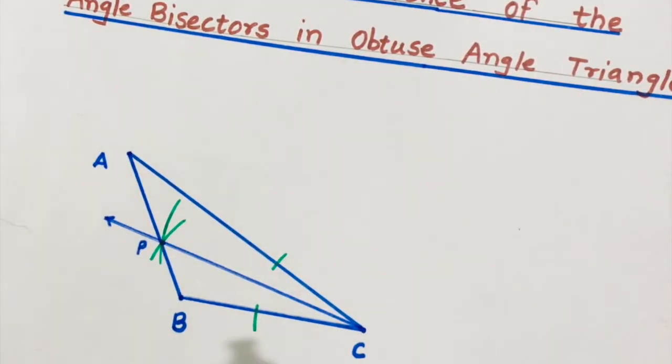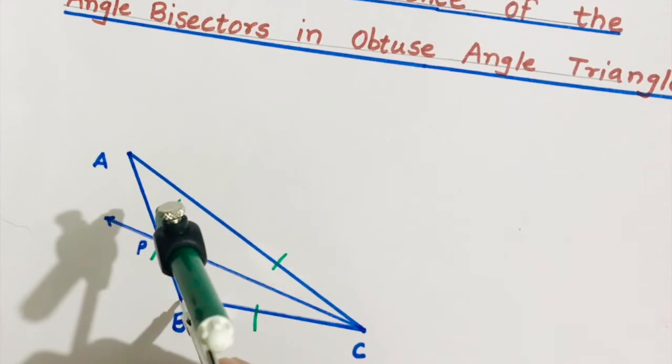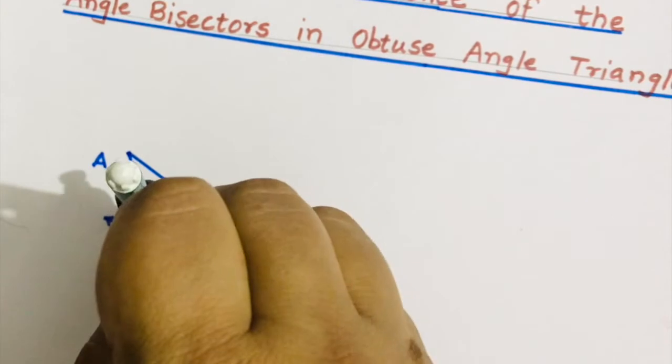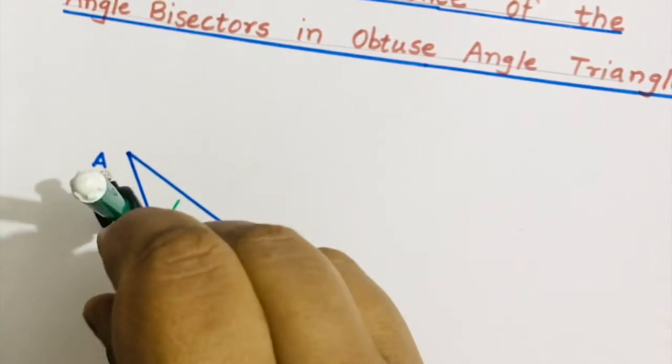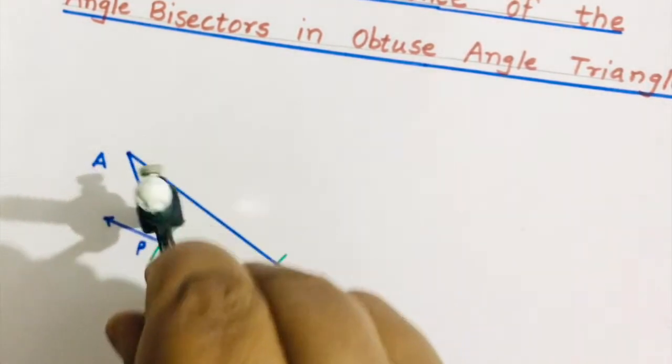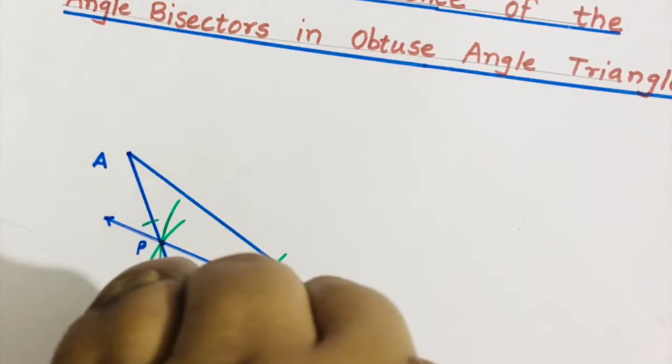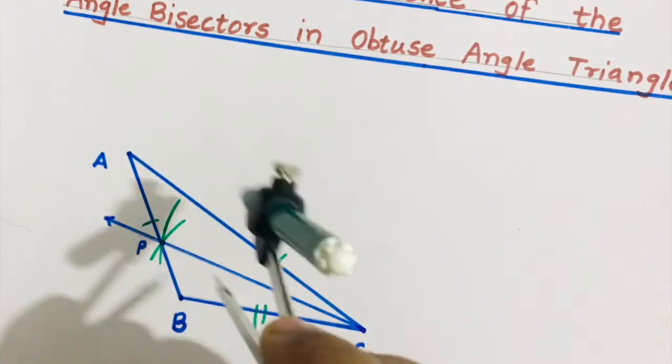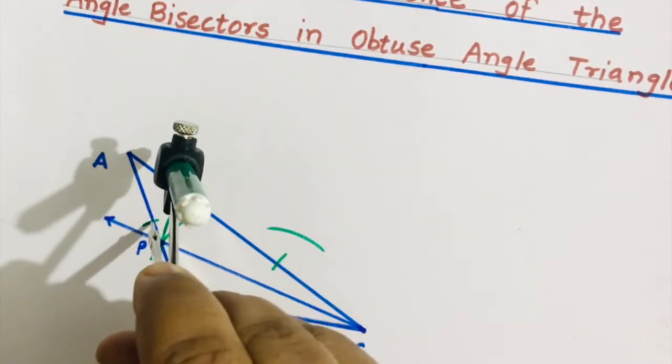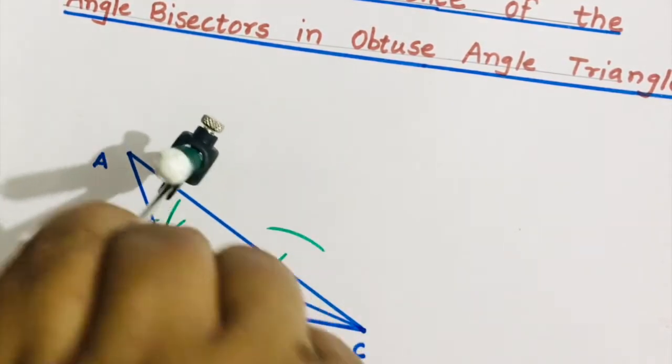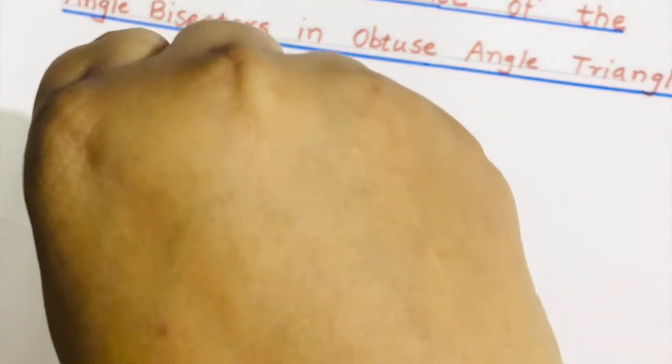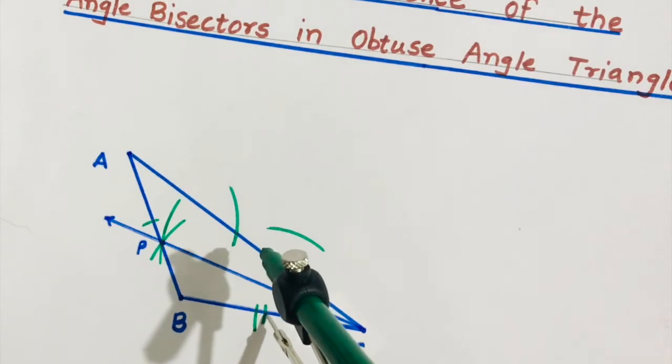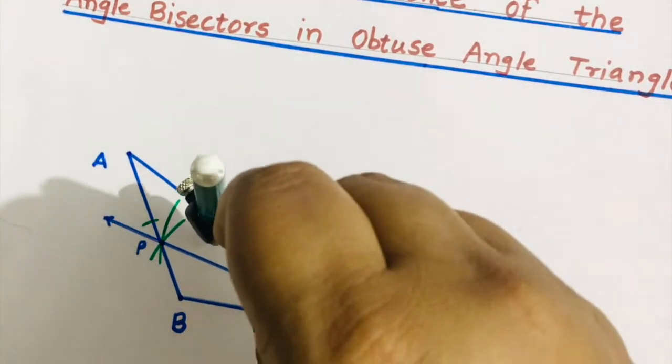We need to do the same procedure from the point C. We should find out angle bisector of angle B. Now since these arcs are not intersecting, so you can draw one more time.